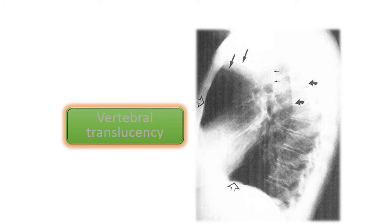Vertebral translucency is another important sign to assess whether the X-ray is optimally exposed. Normally, the lower dorsal vertebral bodies should be clearly visible on a lateral chest X-ray and gradually become less distinct as we move upward. If vertebral translucency is obliterated earlier than this normal pattern, there may be a pathological shadow in that region.